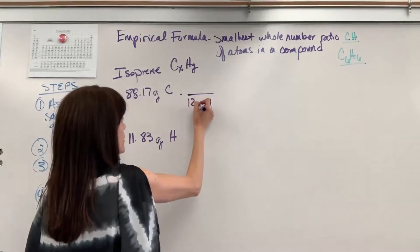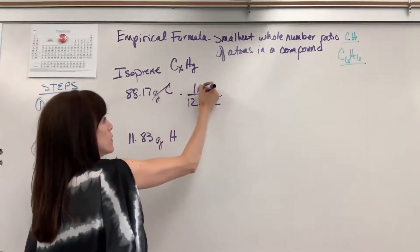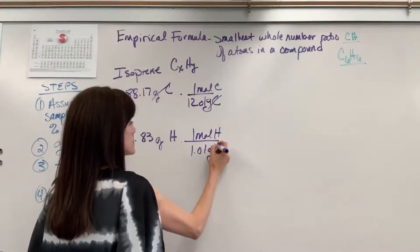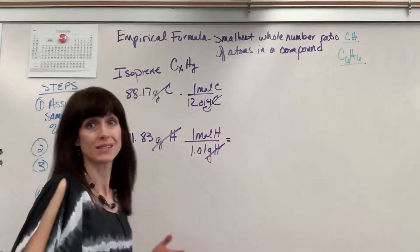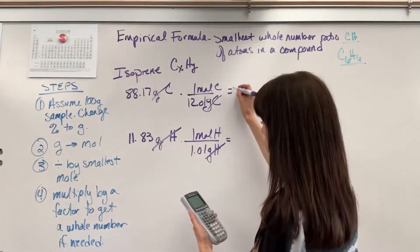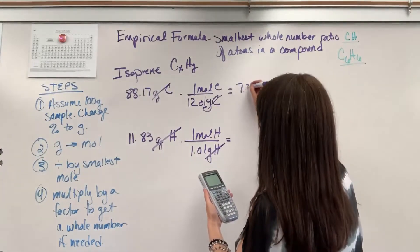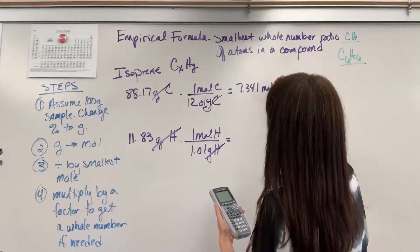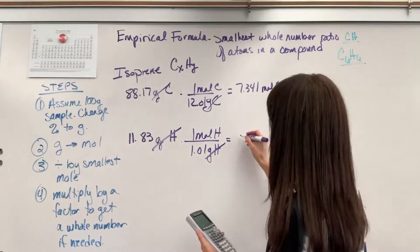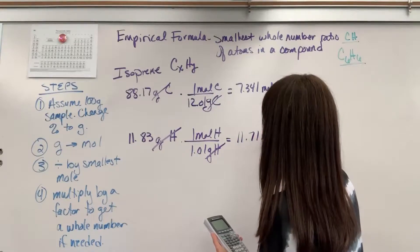I'm going to put our 12.01 grams of carbon on the bottom so the grams cancel. One mole of carbon in the numerator. Hydrogen. One mole of hydrogen has 1.01 grams of hydrogen. Grams cancel and we're going to end with moles. Let's do the calculation here. 88.17 divided by 12.01. I'm going to do four sig figs since that's what we're given in the percentage will be 7.341 moles of carbon. Now the hydrogen, 11.83 divided by 1.01 is 11 point, I'm going to go to four sig figs, 7.1 moles of hydrogen.